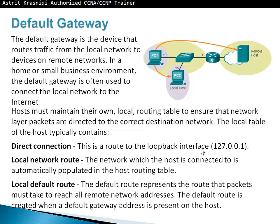The default gateway is the device that routes the traffic from the local network to devices on the remote network. In a home or small business environment, the default gateway is often used to connect the local network to the internet. Hosts must maintain their own local routing table to ensure that network layer protocols are directed to the correct destination network. The local table of the host typically contains direct connections.